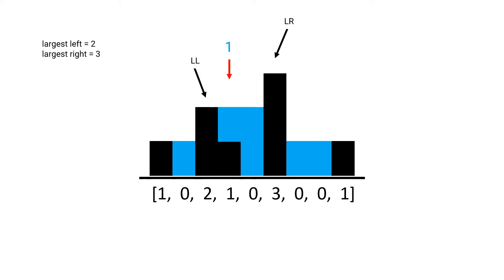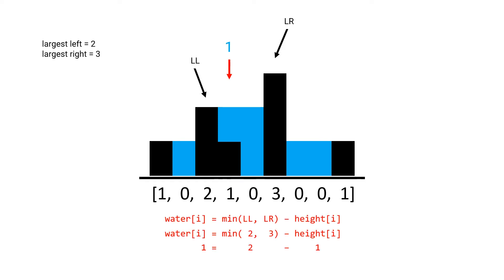For position four, the largest bar to the left is at position three with a height of two, and the largest bar to the right is at position six with a height of three. We take the minimum of the largest left and the largest right which gives us two. However, since this position itself has a height of one, the position cannot hold two units of water but rather two minus the position's height of one, for one unit of water. Using this observation we can produce a formula: the minimum height of the largest left and largest right minus the height of position i itself.